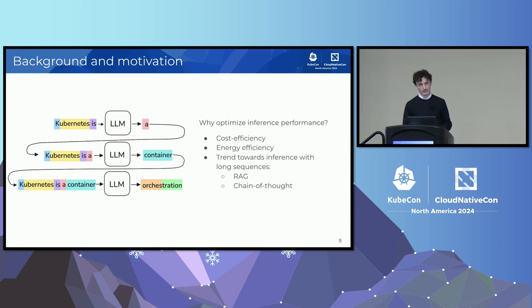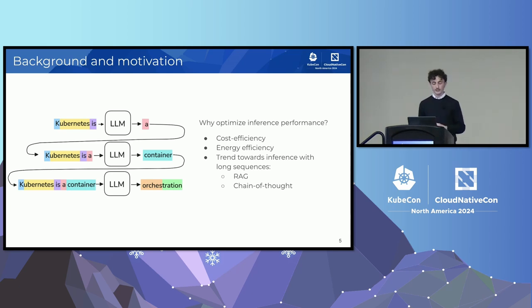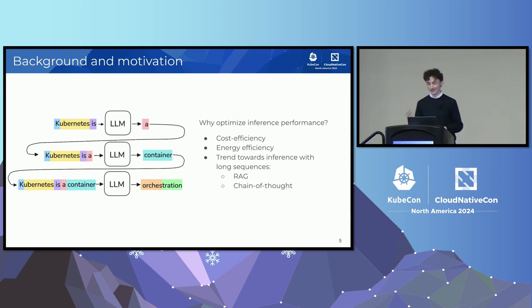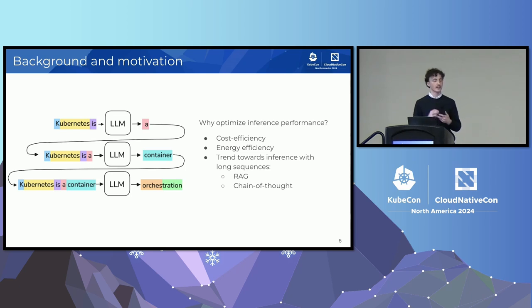Why do we care about optimizing LLM performance? LLMs are deployed on expensive hardware accelerators like GPUs, so organizations want to get the most out of that investment. Accelerators also consume a lot of energy, so optimizing performance matters for cost and energy savings. There's also a trend toward use cases involving long sequences — RAG and chain-of-thought reasoning, like what OpenAI does with their latest models, where the model generates a long plan before answering. This means more work during inference, making inference speed even more critical for user experience.